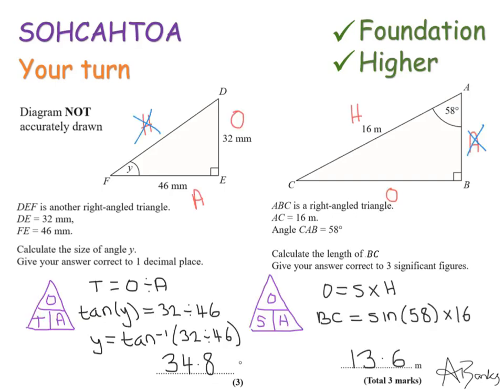Here's the full work solution. So the first question, you should have used your TOA. So you should be using TAN. You had to use the inverse of TAN to find the angle, which is 34.8 degrees to one decimal place. And the second one, the side BC is the side at the bottom, which this time is in fact the opposite. So to find that side, we're using SOH, which is our SIN, and times SIN 58 by 16. So I get 13.6 to three significant figures. Thank you for watching.